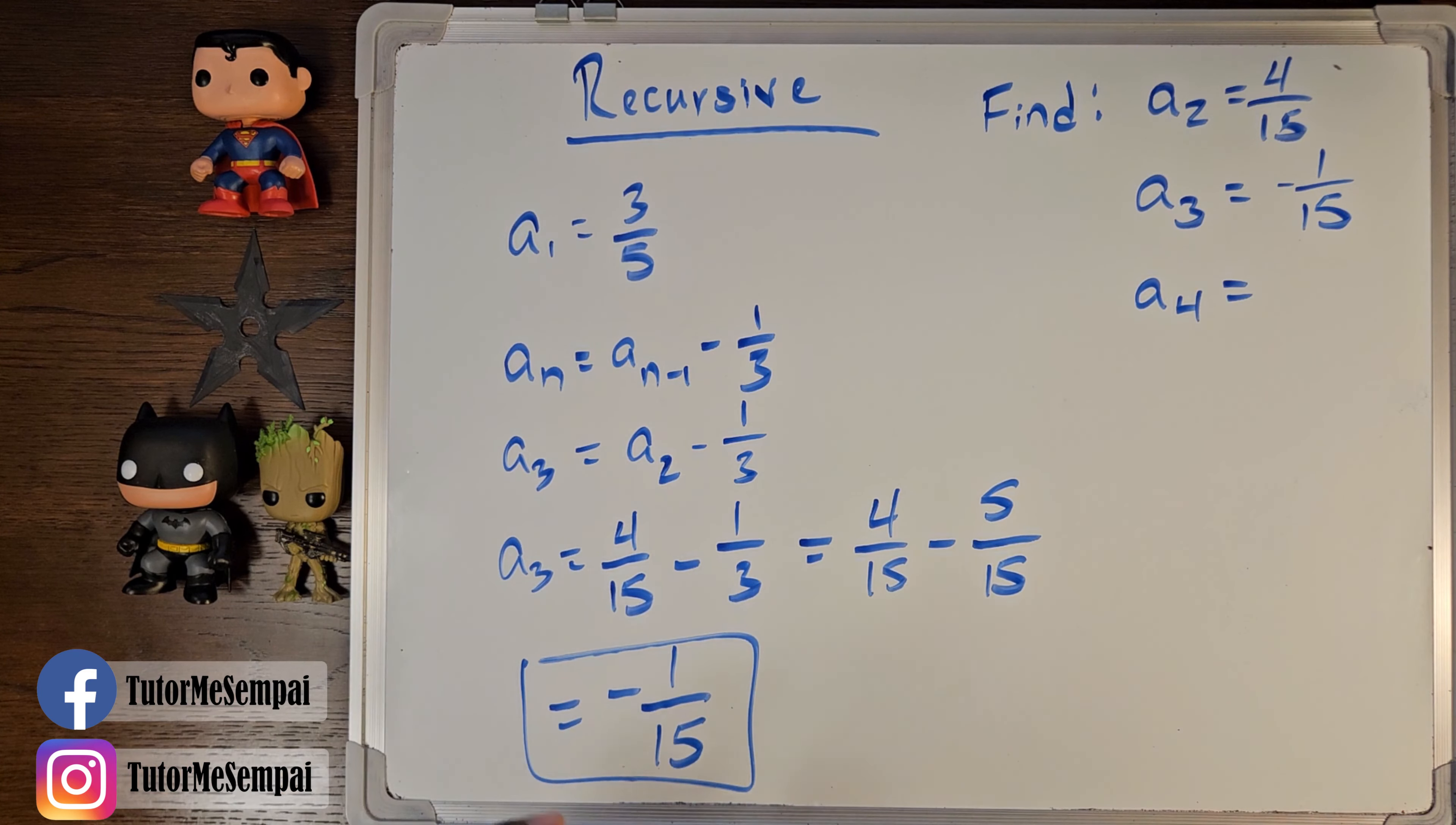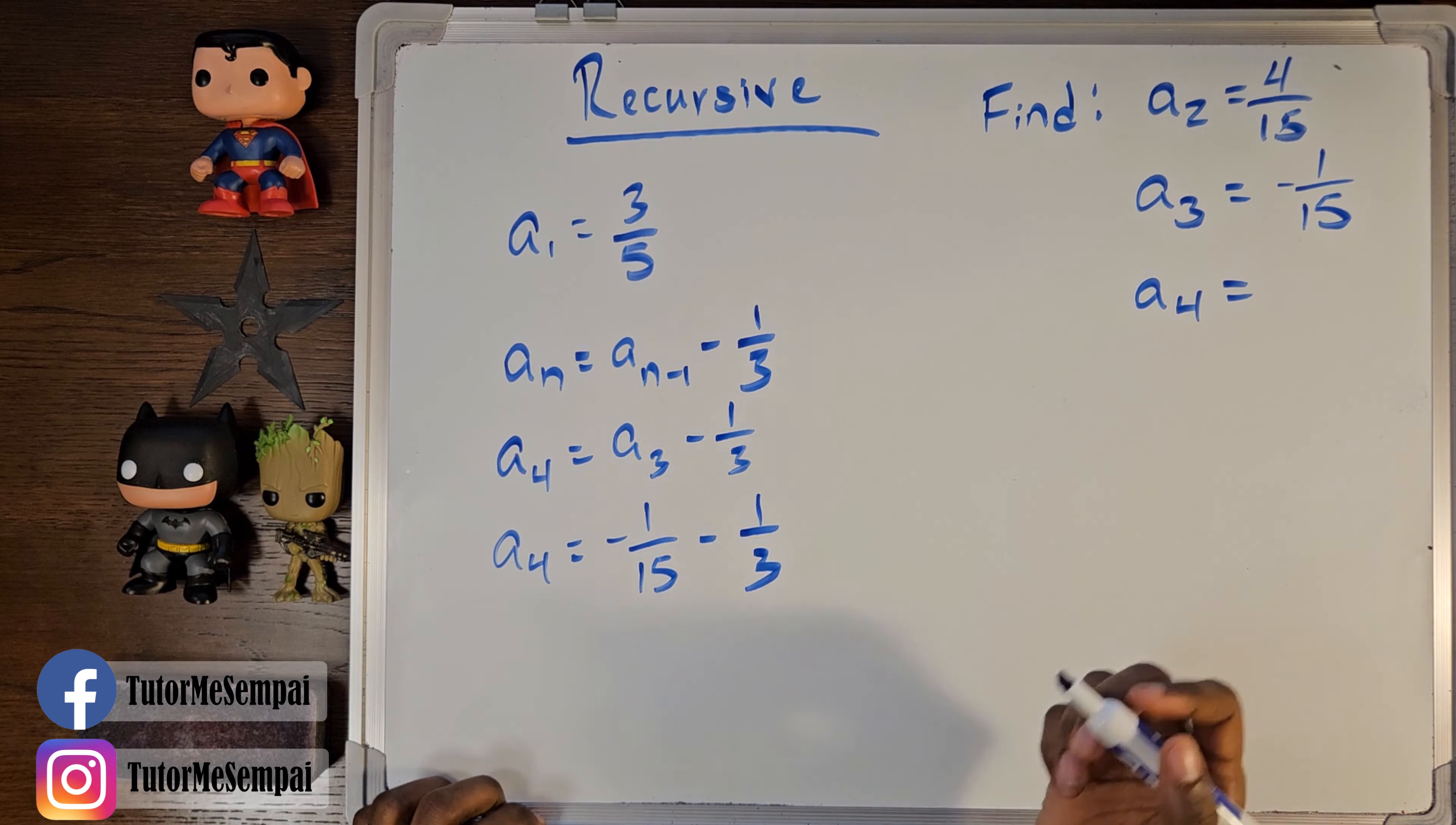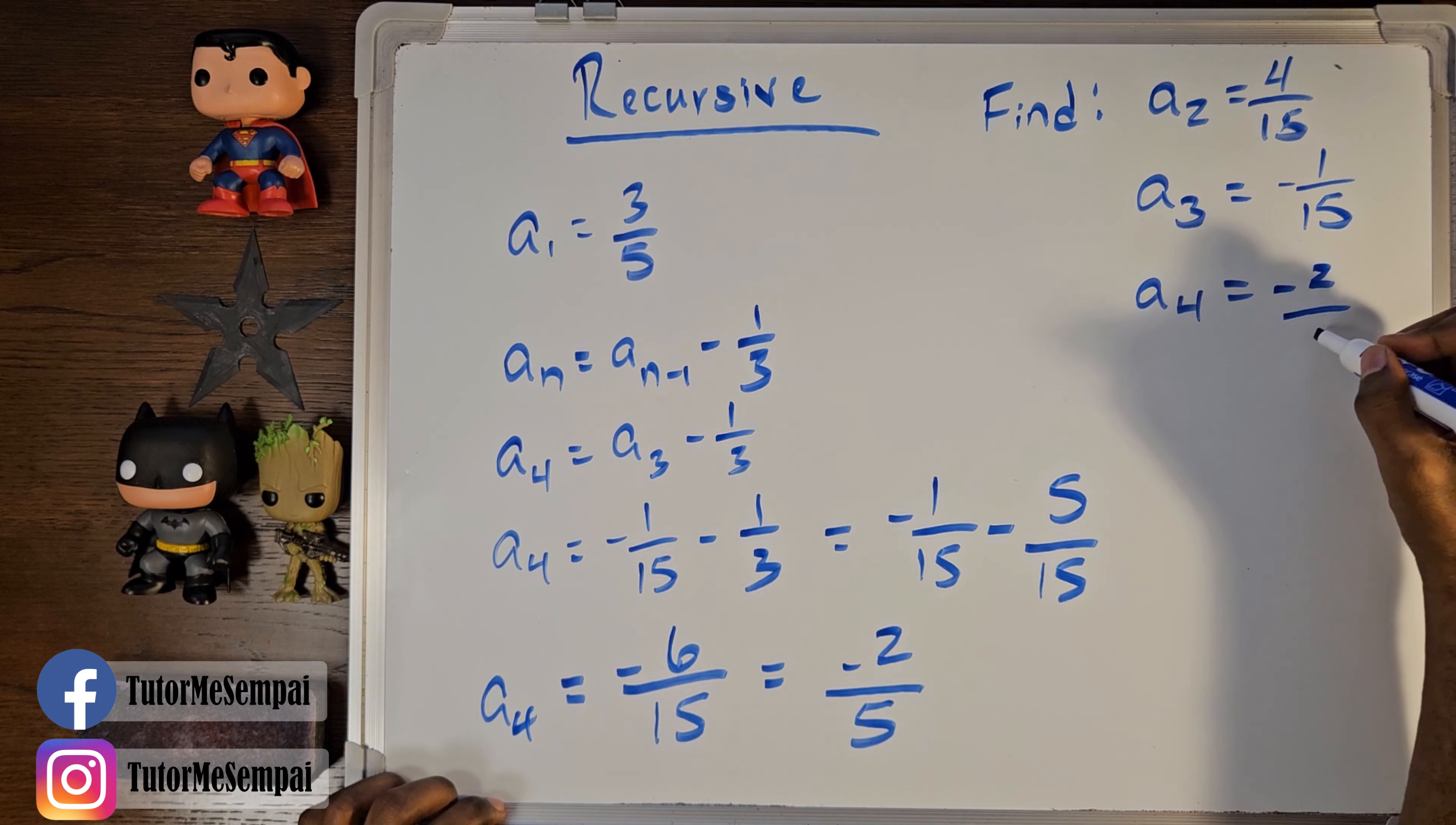And of course, we're going to do the same exact thing to find our a sub 4. We're going to plug in what we just found. So, in this case, we have a sub 4 equals our a sub 3 minus 1 third. And our a sub 4 is going to be our negative 1 over 15 minus 1 over 3. And of course, you can rewrite this as negative 1 over 15 minus 5 over 15. And this simplifies to negative 6 over 15. And of course, you can simplify this a bit more. There's a 3 on the top and a 3 on the bottom you can take out, leaving you with a negative 2 over 5. So, our a sub 4 is going to be negative 2 over 5.